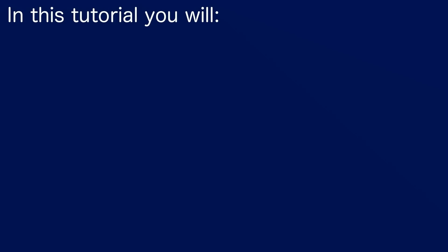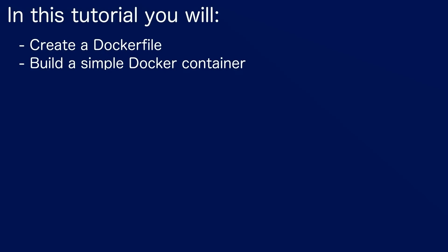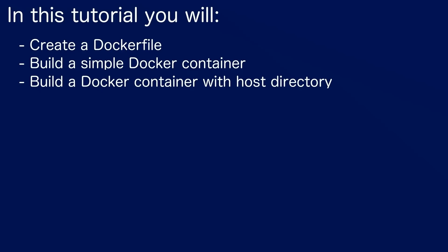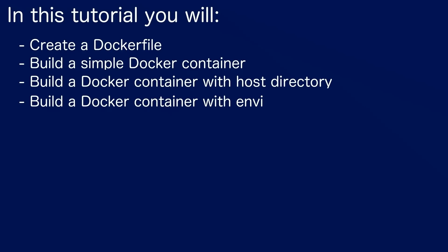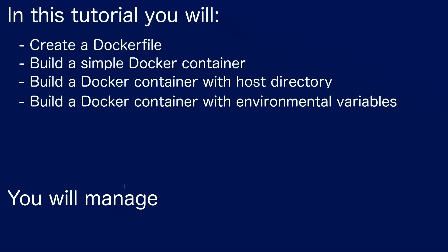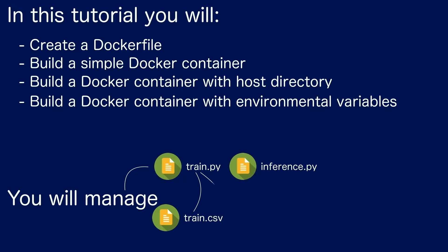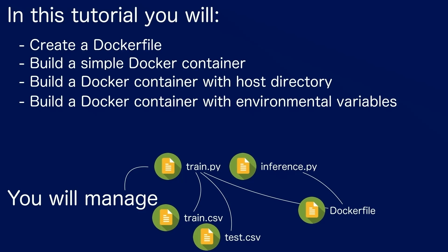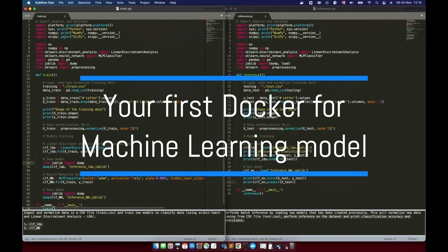In this tutorial you will first create a Dockerfile, then build a simple Docker container, build a Docker container with a host directory, build a Docker container with environment variables, and then manage a file structure with train.py and inference.py that control train.csv and test.csv files for managing data, and use a Dockerfile that describes the behavior in the Docker container. Let's go to a real example.